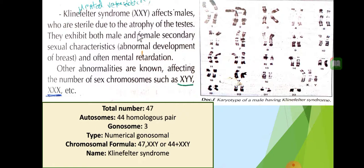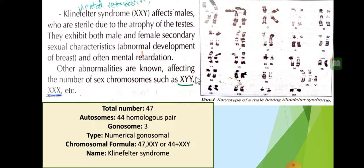This male has an extra X chromosome. Since XX is normally female, this individual shows both male sexual characteristics (due to the Y) and female sexual characteristics (due to the extra X) at the same time. He may display more feminine behaviors and physical traits. Other abnormalities include abnormal development of the breast and often mental retardation. Other abnormalities affecting the number of sex chromosomes include XYY (extra Y) or XXX (trisomy X).